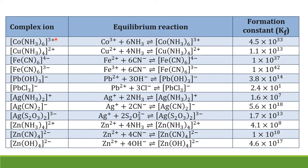This slide shows complex ions with their equilibrium and Kf values. You can see the values of Kf are quite high — this is the opposite of Ksp from the last lesson. Kf has a power of times 10 to a positive value, which is very high. This means that when a metal ion is surrounded by ligands, it forms a complex very easily. A high equilibrium constant means the product occurs in a large amount.